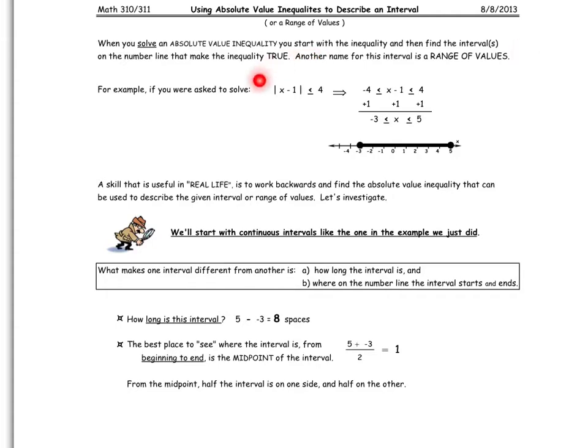So I started with absolute x minus 1 less than or equal to 4, and because I had less than or equal to a positive number, this was a standard less than setup with x minus 1 in the middle between negative 4 and positive 4. Adding 1 to all three sections gave us our range of values. In order for this original inequality to be true, we need negative 3 to be less than or equal to x, and x to be less than or equal to 5.